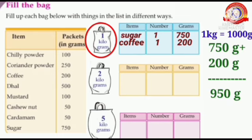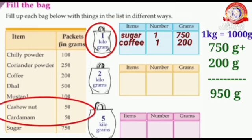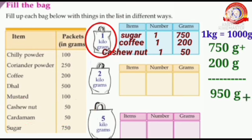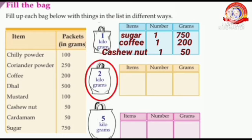We need 1000 grams for one kilogram. How many more grams do we need? Yes, 50 grams. Looking at the list, which items weigh 50 grams? Yes — cardamom and cashew nut. We can take either one, so let's take one packet of cashew nut at 50 grams. The total is 950 grams plus 50 grams equals 1000 grams. So we filled the 1 kilogram bag with 750g sugar, 200g coffee, and 50g cashew nut.